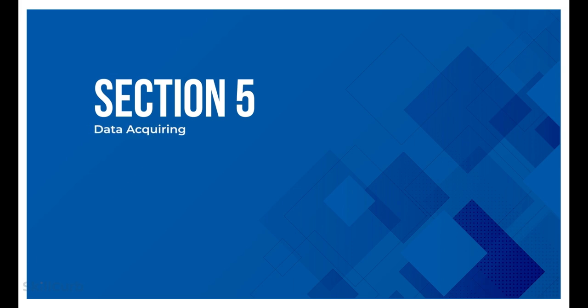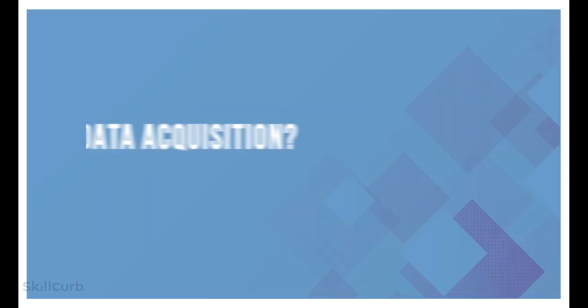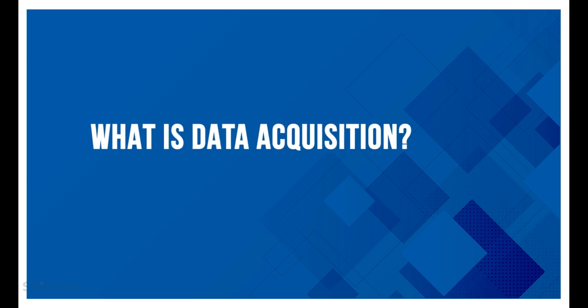When a machine wants to learn a certain algorithm, it needs data to learn. In this module, we will go through the step-by-step procedures for collecting data, processing it, knowing what formats it is contained in, and how to bring it to your machine. Data acquisition is the process of collecting a dataset that is relevant to the scope of the learning algorithm you are looking for.